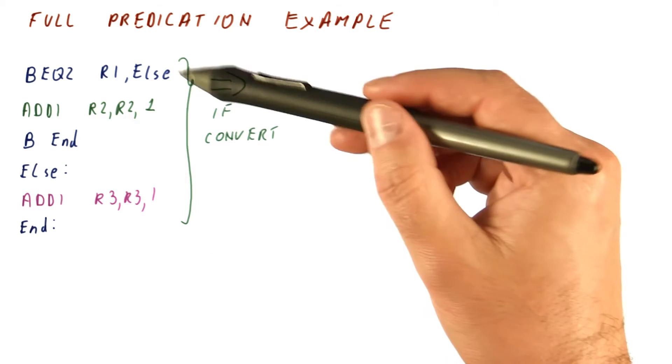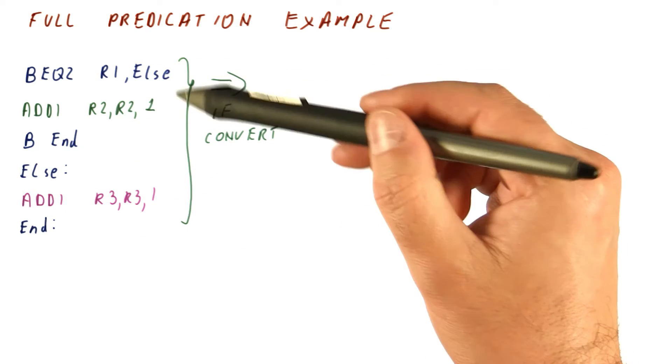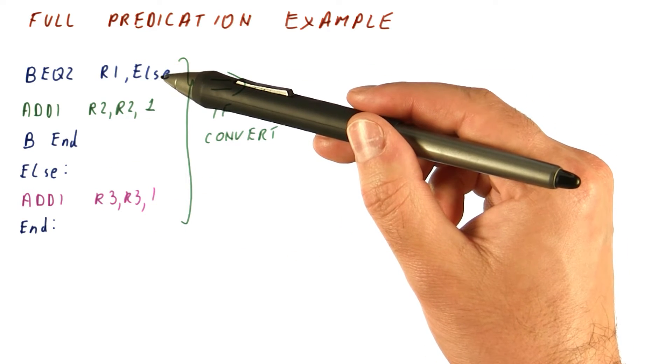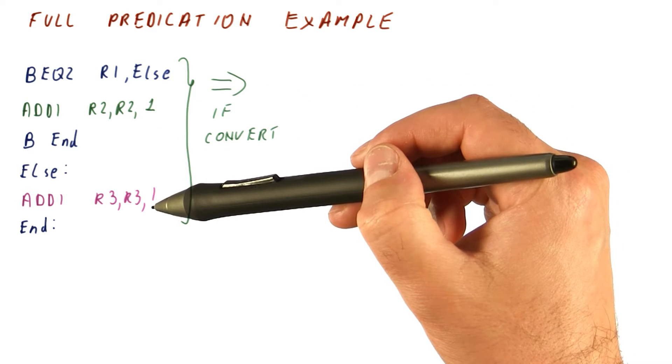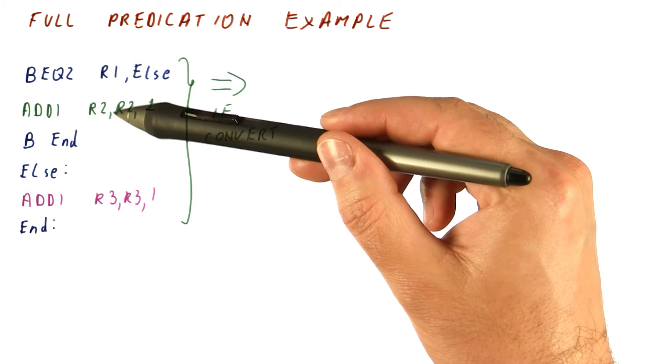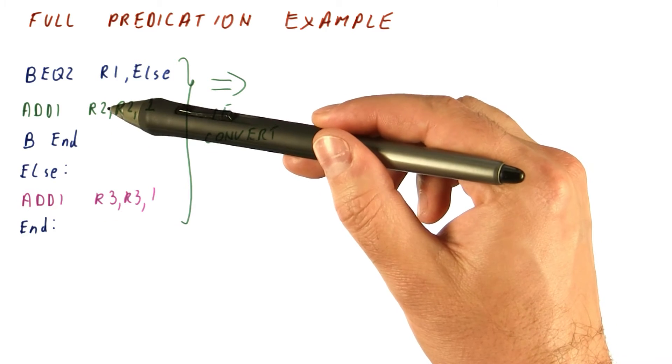We have seen that this code results in four instructions worth of execution when we have conditional moves. Two instructions that actually do the work of add i's and two instructions that conditionally write results back to R2 and R3.